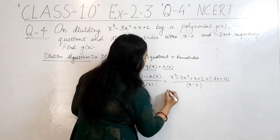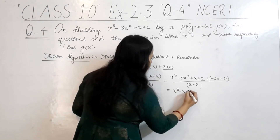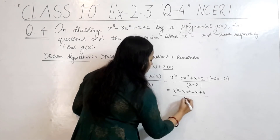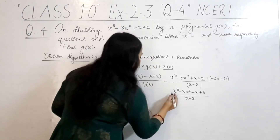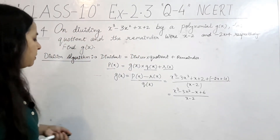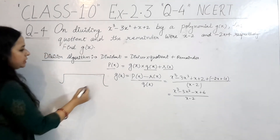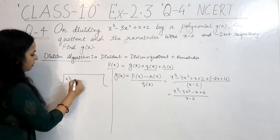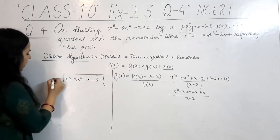Now if we simplify, p(x) minus r(x) gives us x cubed minus 3x squared minus x plus 6, and this is divided by q(x), which is x minus 2. So we need to perform long division: divide x cubed minus 3x squared minus x plus 6 by x minus 2.